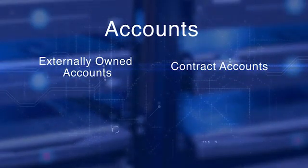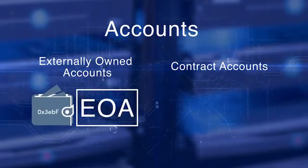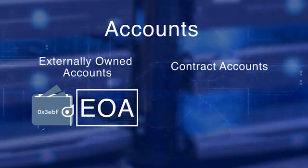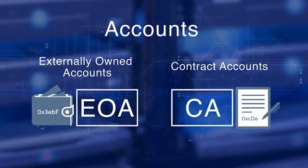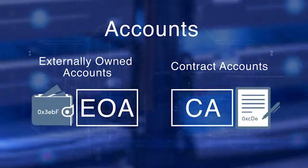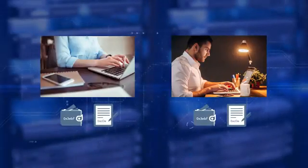Externally owned accounts, or EOAs, are controlled by private keys. Contract accounts, or CAs, are controlled by code and can be activated only by an EOA. An externally owned account is needed to participate in the Ethereum network and it interacts with the blockchain using transactions. A contract account represents a smart contract.